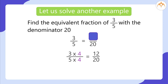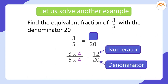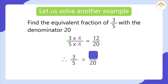So we get numerator 12 and denominator 20 as the answer. Therefore, 3 divided by 5 is equal to 12 divided by 20.